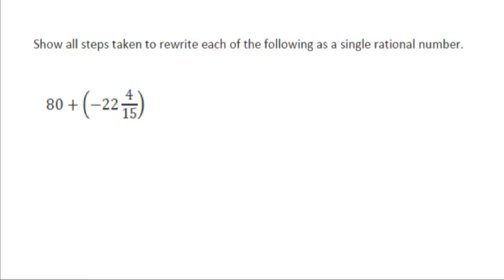So question 1 reads 80 plus negative 22 and 4 fifteenths. In order to show all of our steps, we're taking the number 80 and we're subtracting off not only 22 but the 4 fifteenths. So we could rewrite this as we're taking 80, we're subtracting off 22 and we're also subtracting off the 4 fifteenths. That's one way of writing it as subtraction or you could write it as 80, adding on the negative 22 and adding on the negative 4 fifteenths.